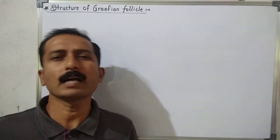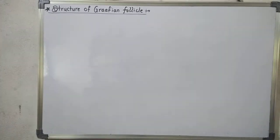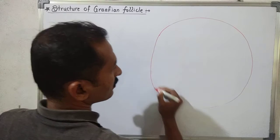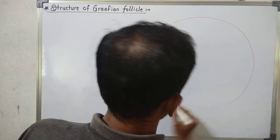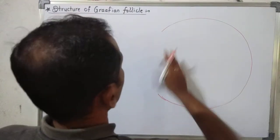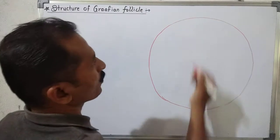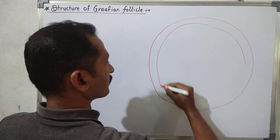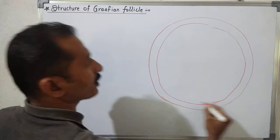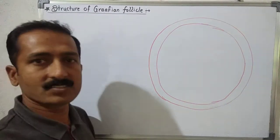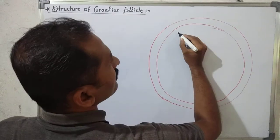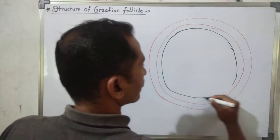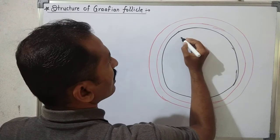The mature Graafian follicle is a circular cellular structure. It is surrounded outerly by a layer called theca externa. Internal to the theca externa there is another layer called theca interna.